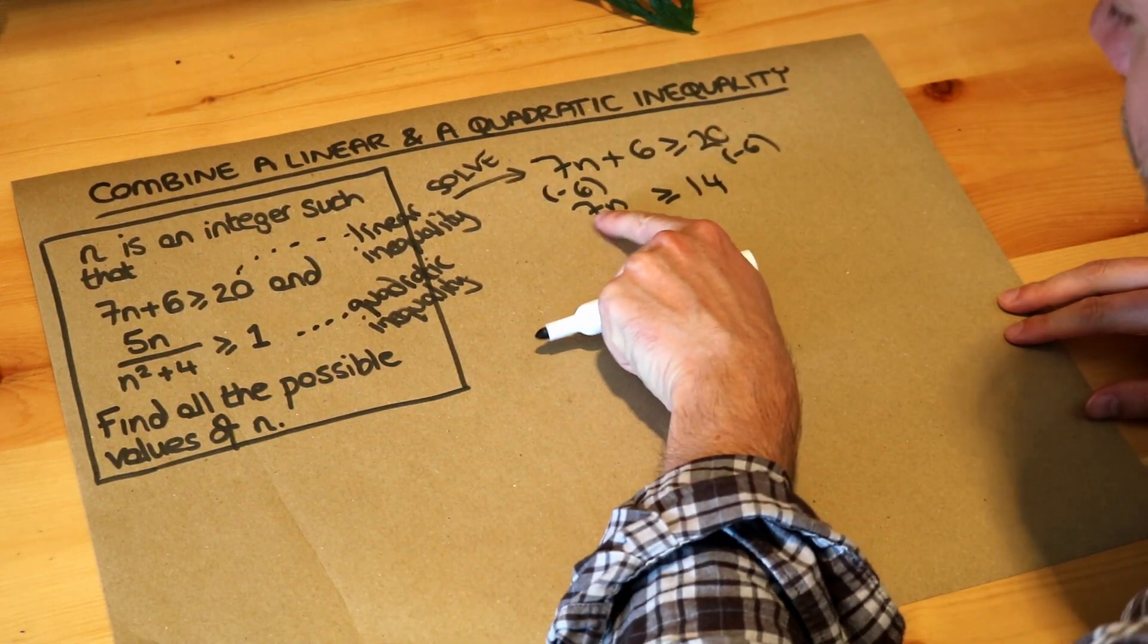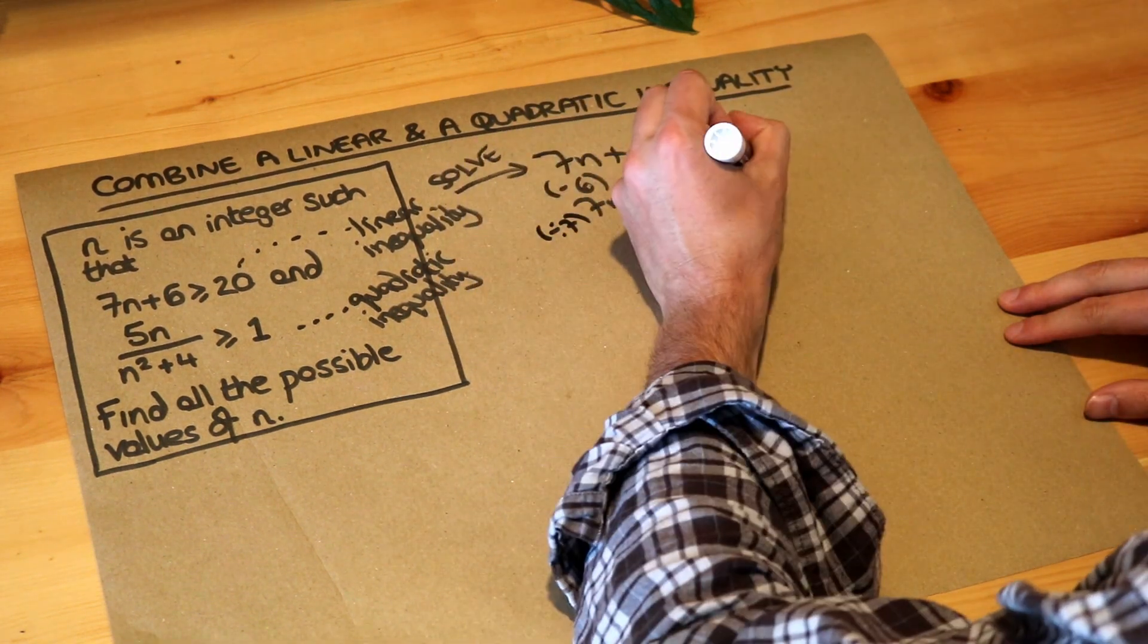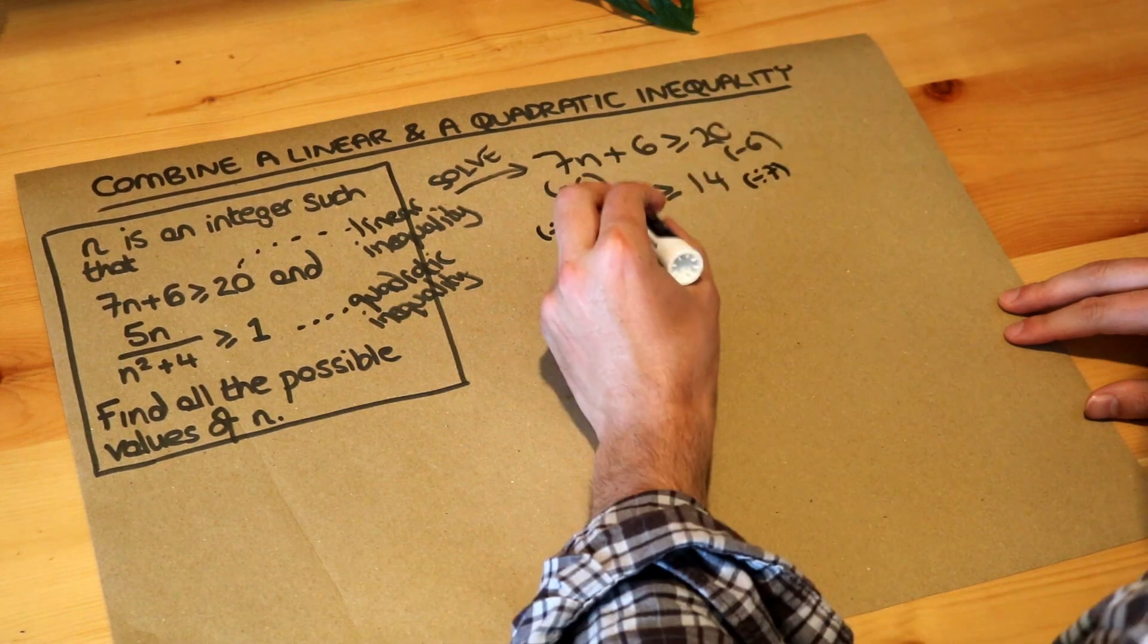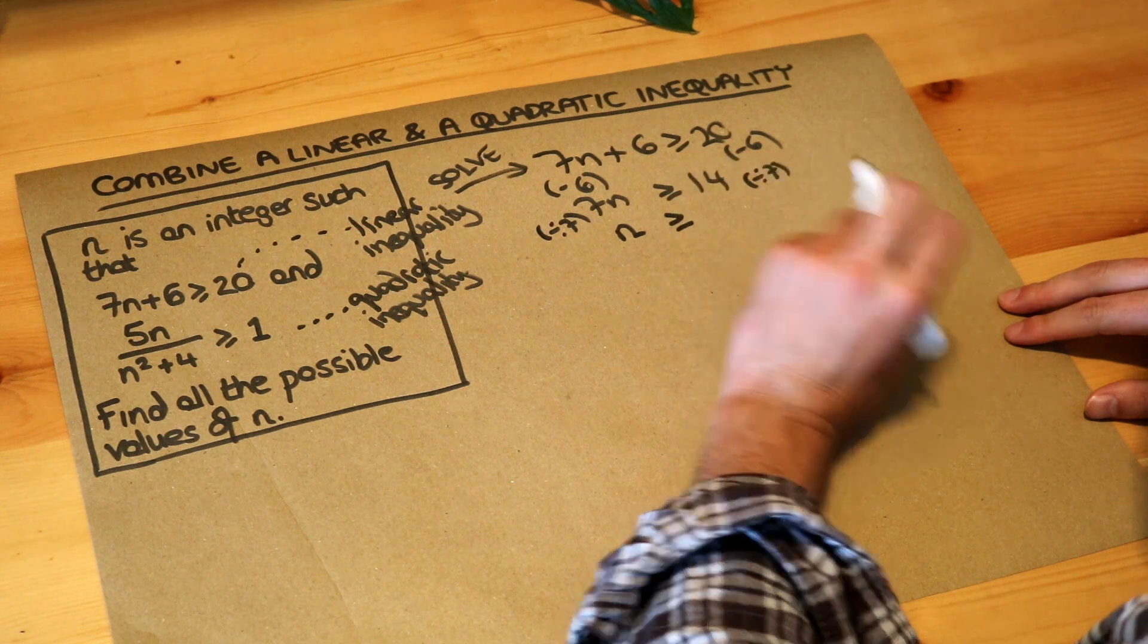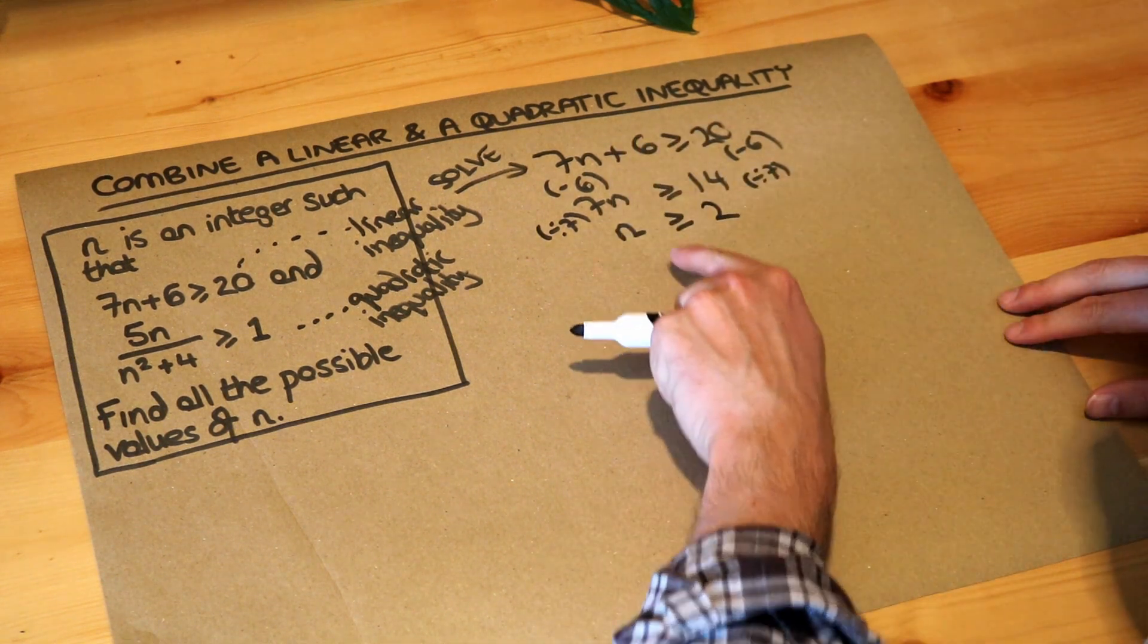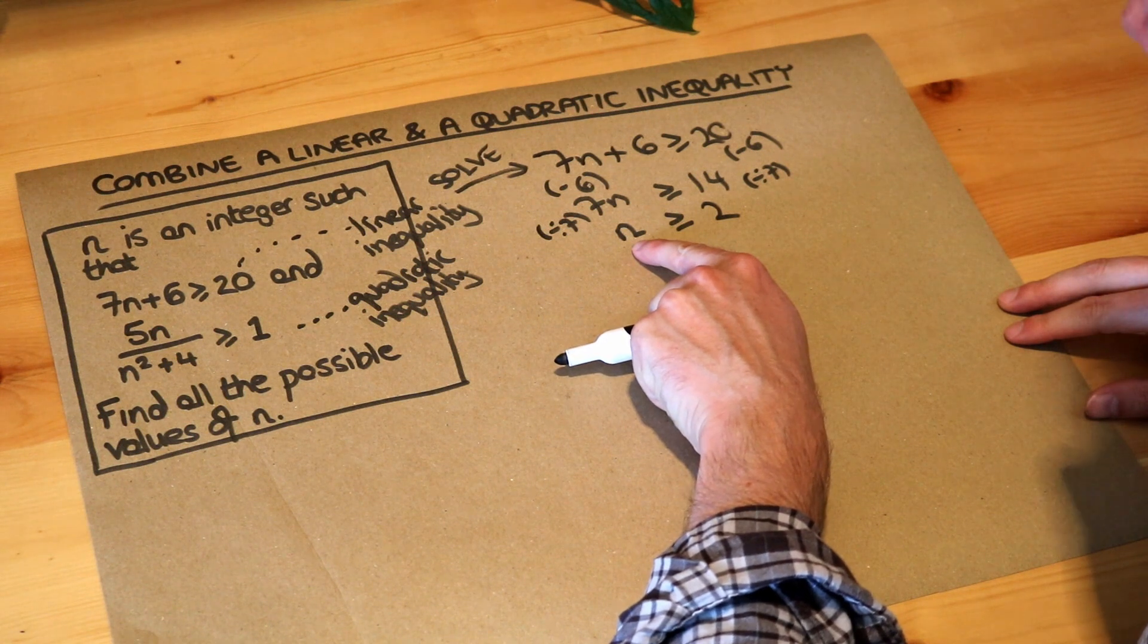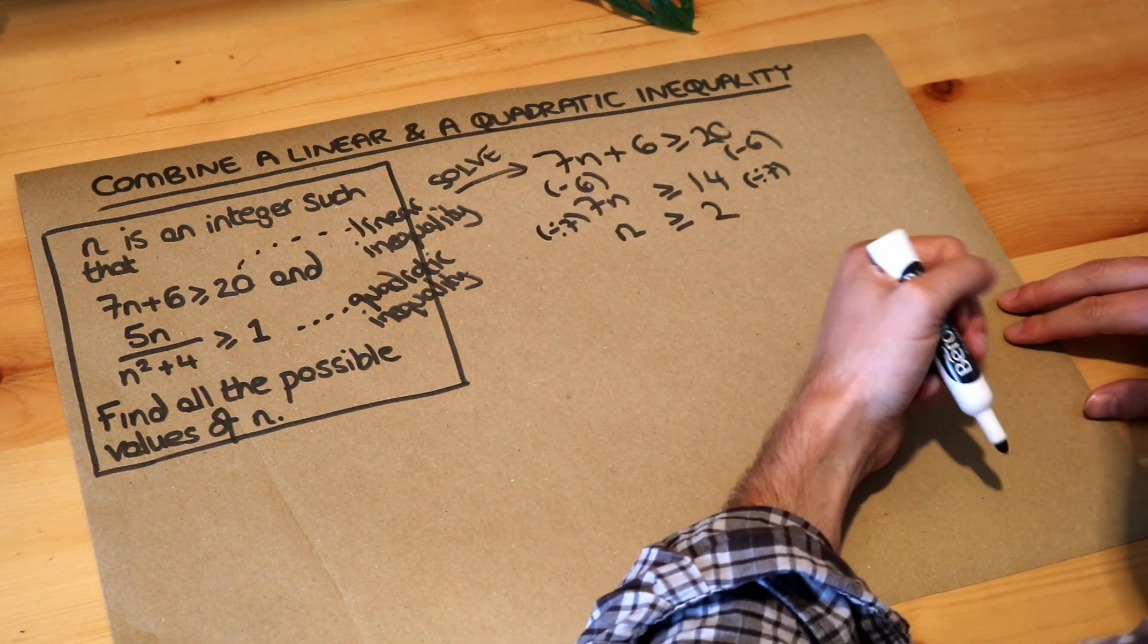And then we want to get rid of the times by 7. N has been multiplied by 7, so we divide both sides by 7. So that just becomes n, and it's greater or equal to 14 divided by 7 is 2. So we've solved the linear inequality. We know that n is any integer that's greater or equal to 2. So it could be 2, 3, 4, 5, 6, etc.